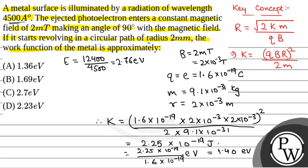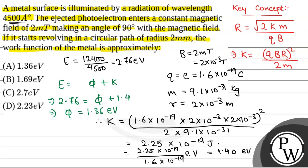Now we apply the photoelectric equation. The kinetic energy is 1.40 electron volt, and the energy of radiation is 2.76 electron volt. So the work function equals 2.76 minus 1.40, which gives 1.36 electron volt. The work function is approximately 1.36 electron volt, which is option A.